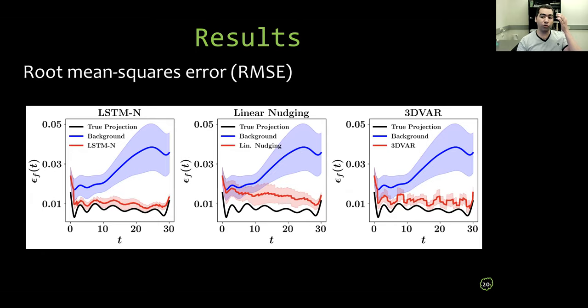For quantitative assessments, we also plot the root mean squared error for the predicted vorticity field at different times. So here we also compare it against linear nudging framework and 3D-Var, which is a classical technique in data assimilation. Again, the solid line represents the average values from an ensemble of 30 different runs with different seed numbers. And the shaded area defines the standard deviation bounds.